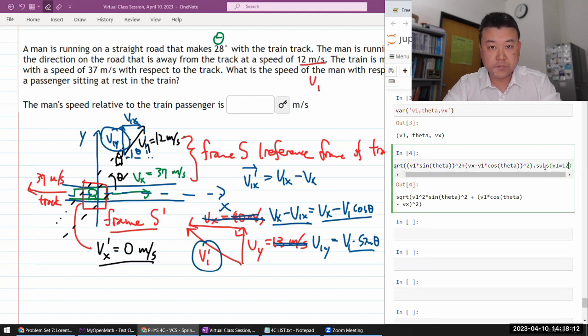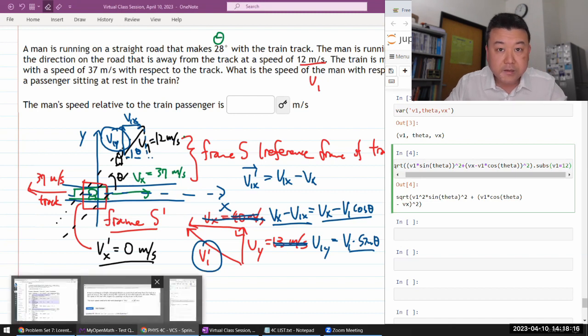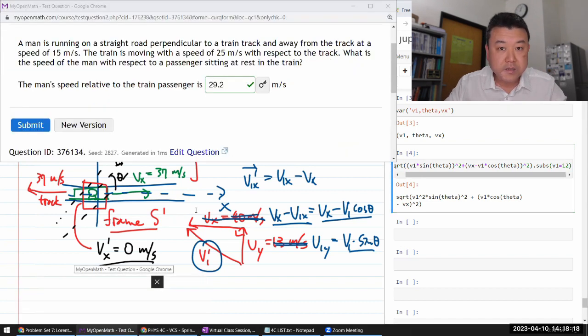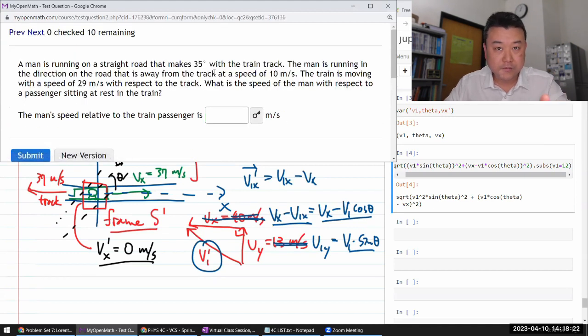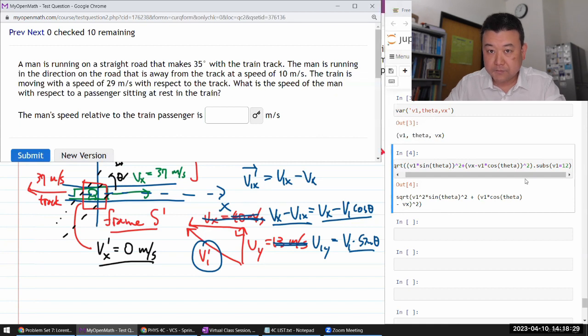v_1 is 12 meters per second. Or actually, let me, the question probably regenerated. So, let me use the version that is in the question. Or it will regenerate. Okay. So, my v_1 is 10 meters per second. My v_x is 29 meters per second. And my angle theta is 35 degrees converted into radians.